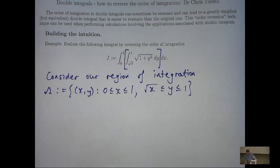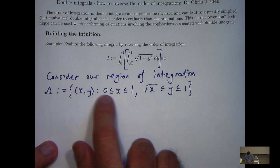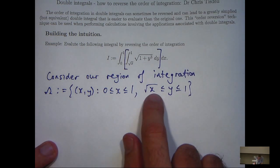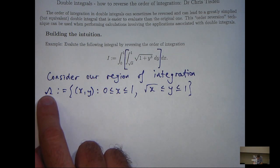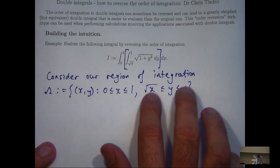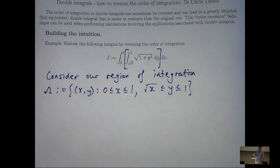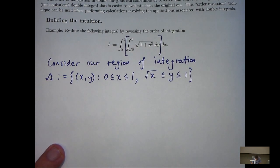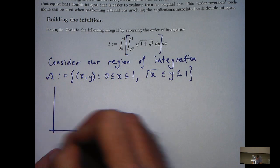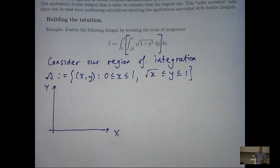Under this description of omega, x is bounded below and above by constants, and y is not necessarily bounded by constants. What we are going to try to do is mathematically re-describe this region omega so that two constants bound our y, and not necessarily two constants bound our x — the nature of these bounds are being reversed. Let's firstly draw omega, because that will give us some insight into the geometry of the problem.